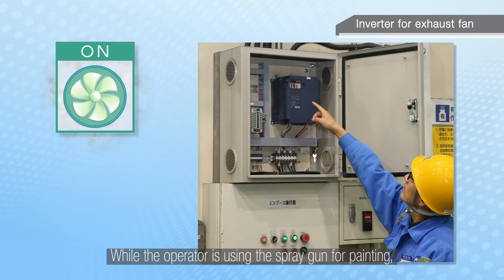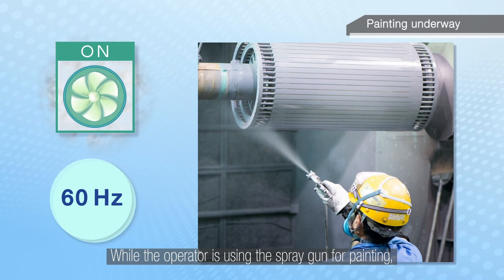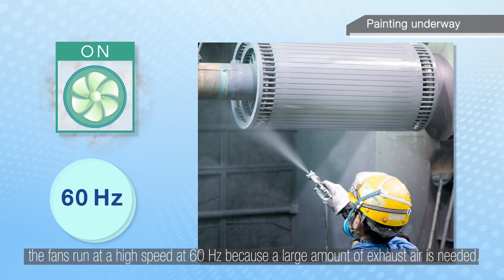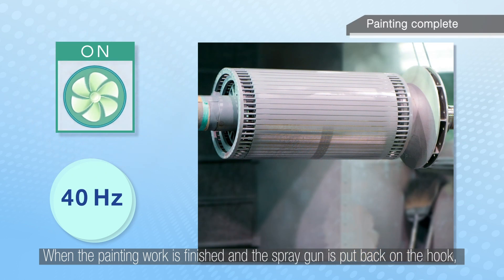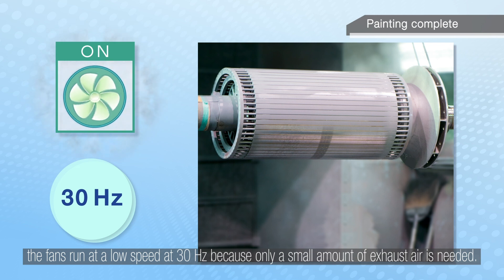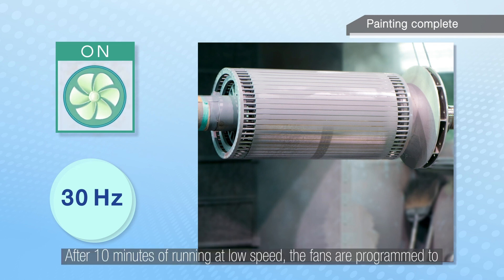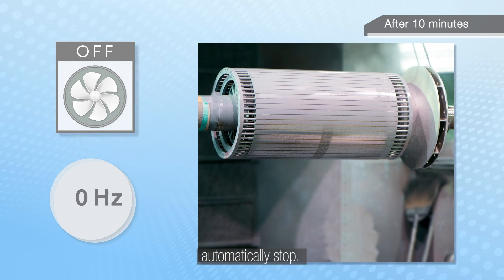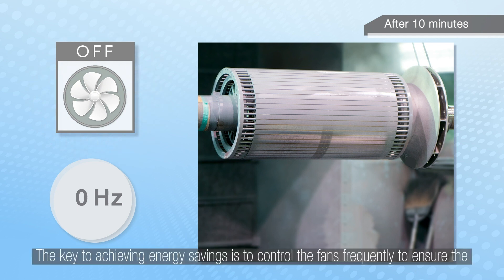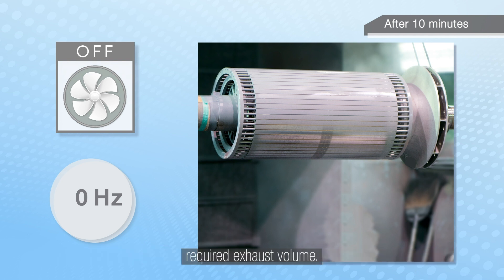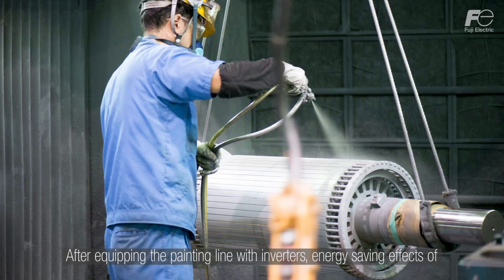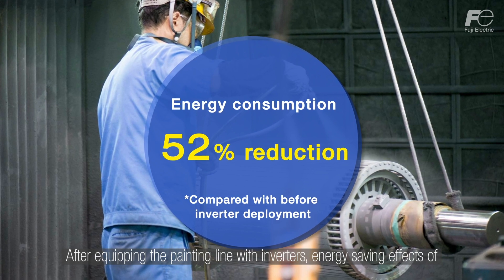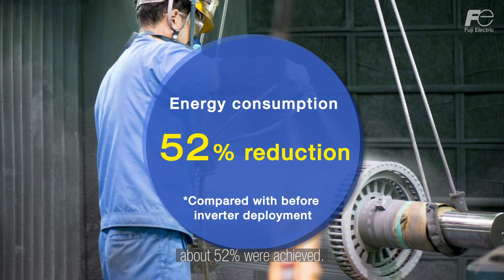While the operator is using the spray gun for painting, the fans run at high speed at 60 Hertz because a large amount of exhaust air is needed. When the painting work is finished and the spray gun is put back on the hook, the fans run at a low speed of 30 Hertz because only a small amount of exhaust air is needed. After 10 minutes of running at low speed, the fans are programmed to automatically stop. The key to achieving energy savings is to control the fan's frequency to ensure the required exhaust volume. After equipping the painting line with inverters, energy saving effects of about 52% were achieved.